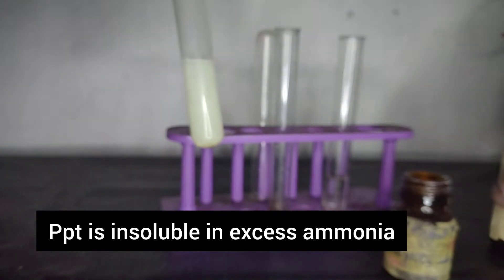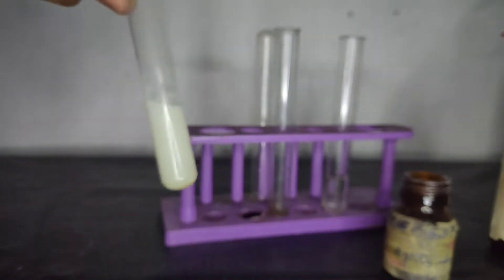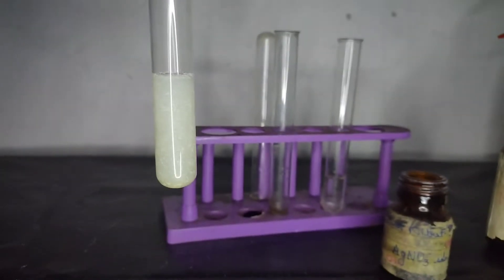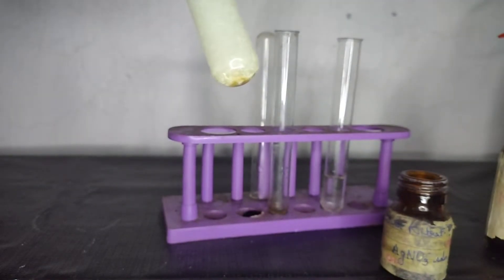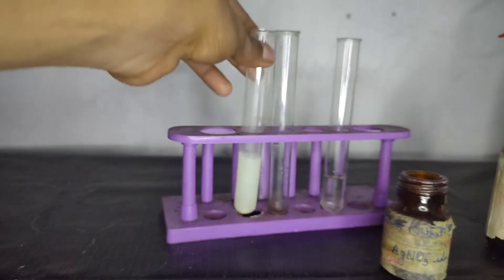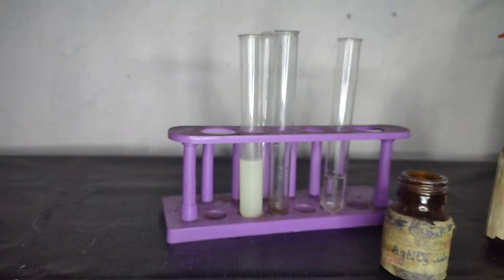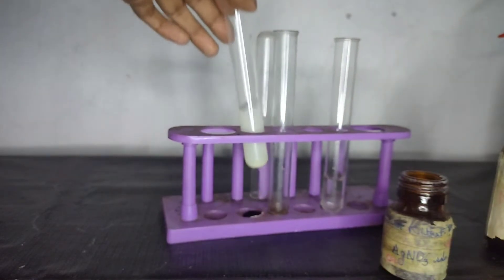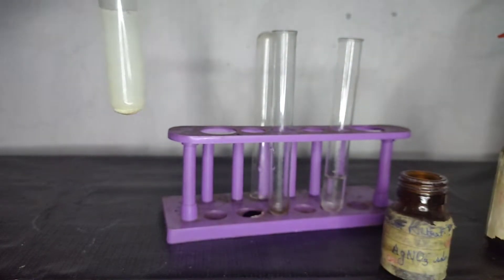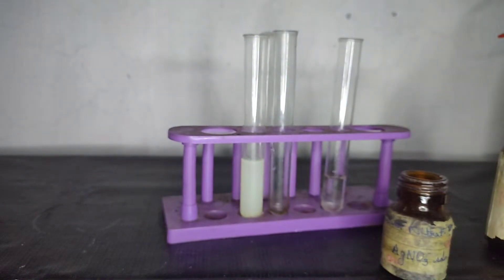On adding ammonium hydroxide in excess, you can see that the precipitate does not dissolve at all. Even if you add potassium iodide to silver chloride dissolved in ammonium hydroxide, it gives a precipitate of silver iodide. Because silver iodide does not form complex with ammonia like silver bromide and silver chloride.